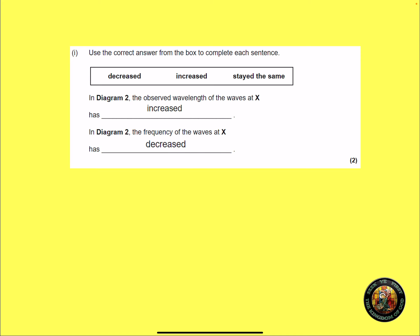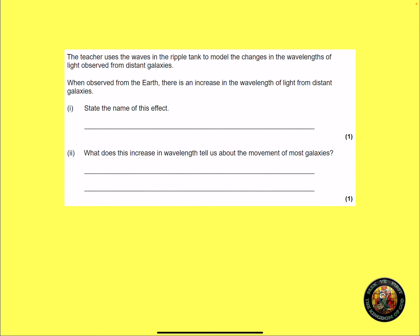Moving on for two marks. That was two marks. The teacher uses the waves in the ripple tank to model the changes in wavelength of light observed from distant galaxies. When observed from the Earth, there's an increase in wavelength of light from distant galaxies. State the name of this effect for one mark and number two, what does increase in wavelength tell us about the movement of most galaxies? Pause the video and have a go of these two. Well, the first one, the name, it's obviously red shift and what does this tell us? The galaxies are moving away and the further the galaxy, the faster it's moving away.